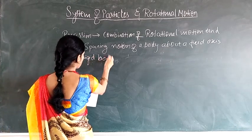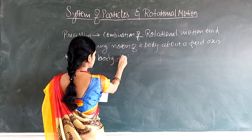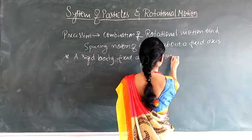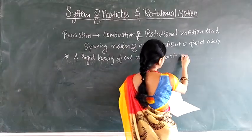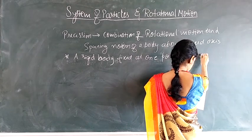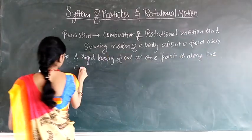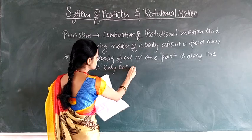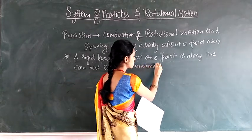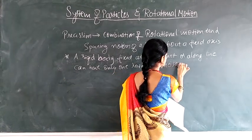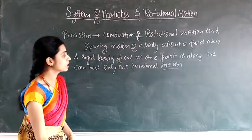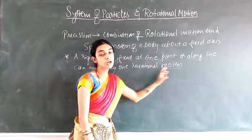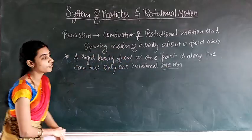If a body is fixed at one point or along one line, it can have only rotational motion. For example, a ceiling fan has one end fixed and therefore only performs rotational motion.